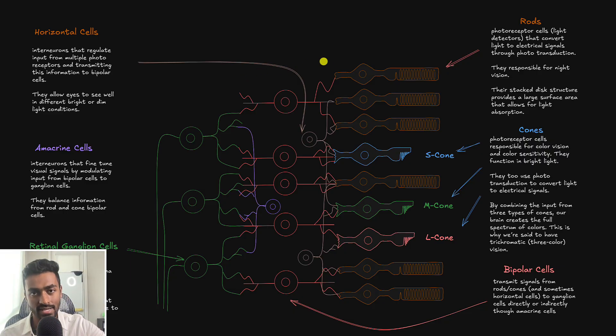The rods and cones are going to now be connected to these bipolar cells. These bipolar cells will send information from the photoreceptors to the ganglion cells here. And typically, bipolar cells are connected to either just rods, or they are connected to just cones. But typically, not both.